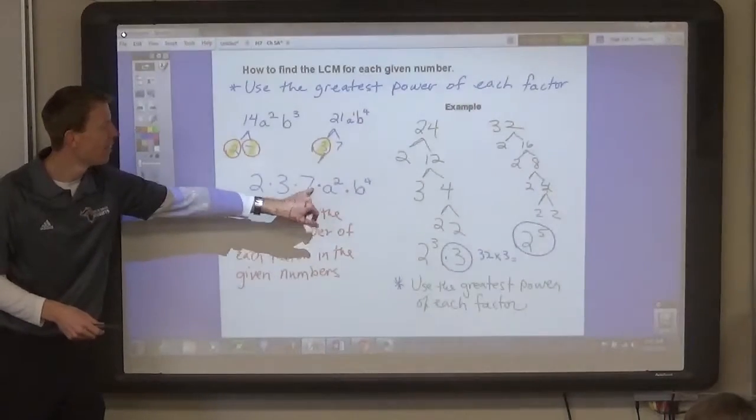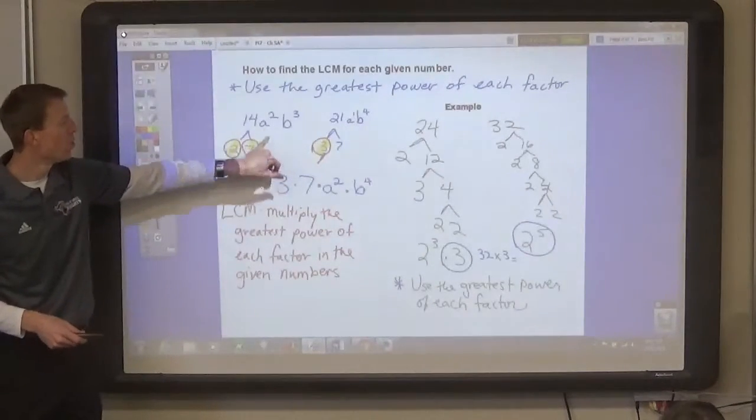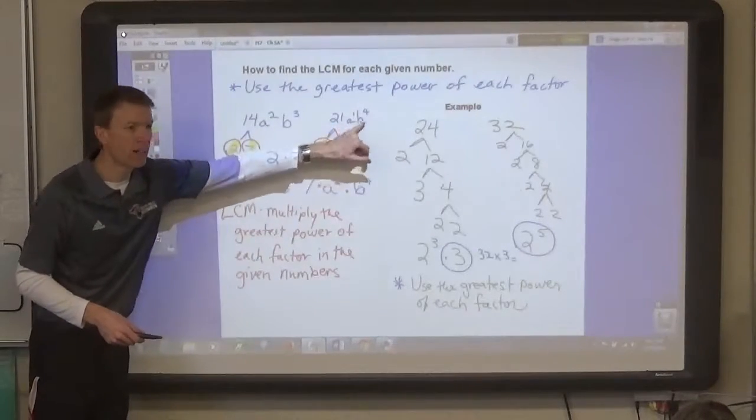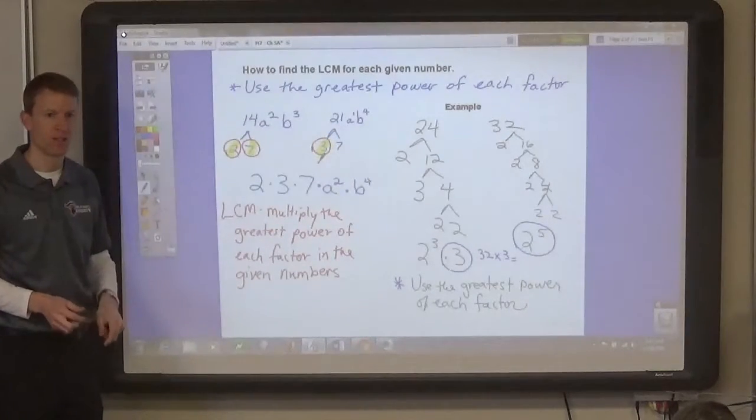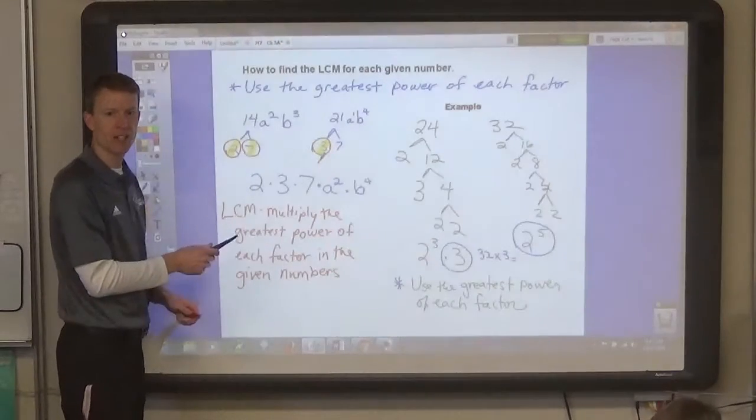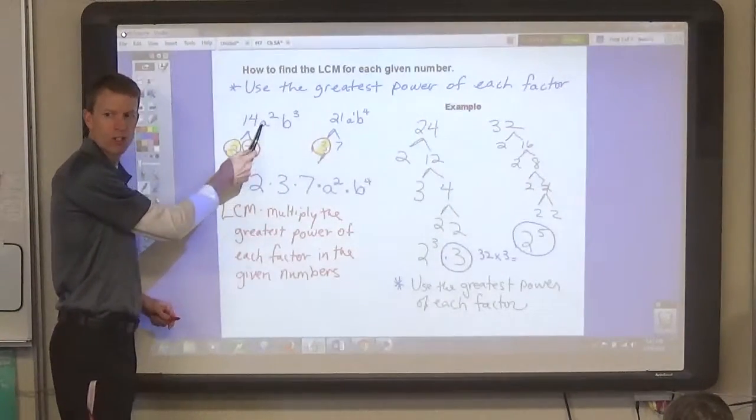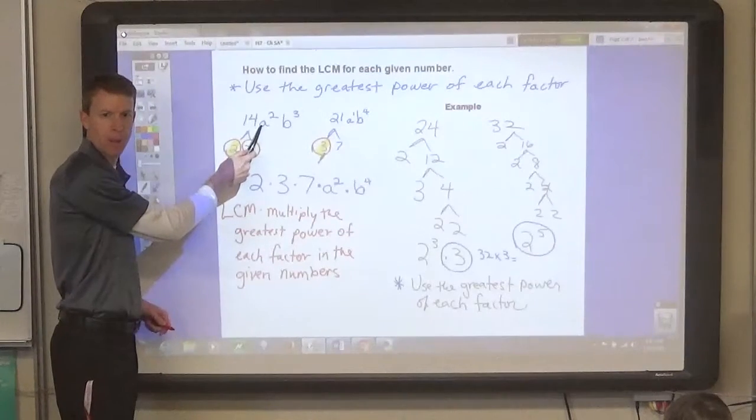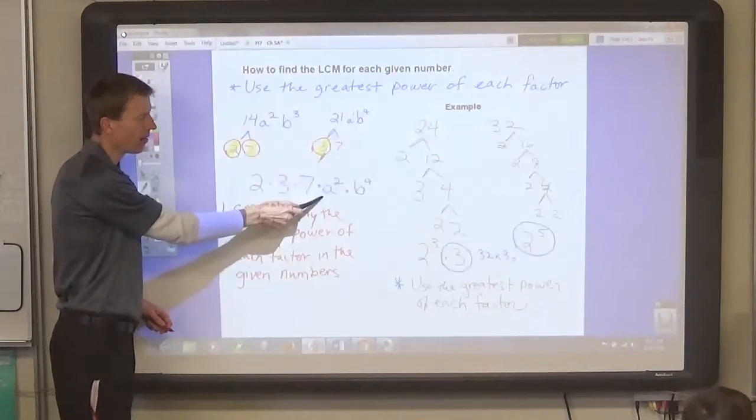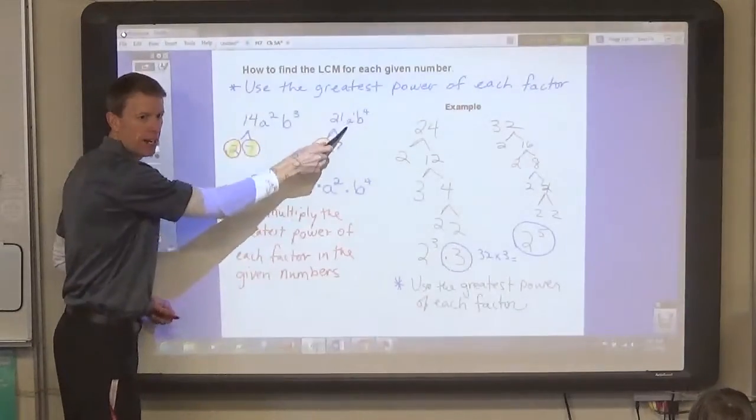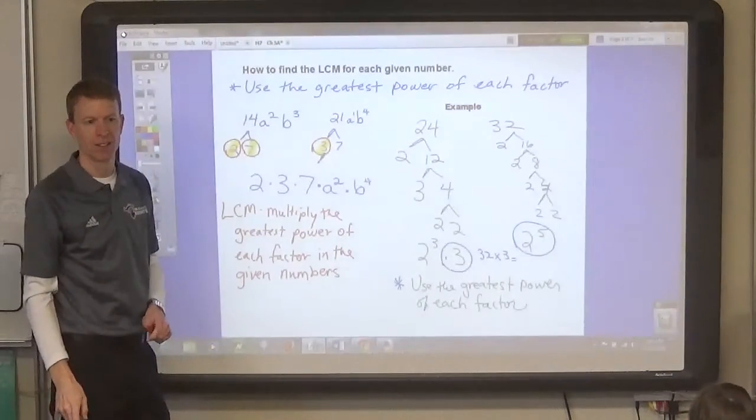Then, you multiply those together. And then, you use the greatest power of each of the variable factors. So, if there's an a squared and an a, which one would you use? Brett? The square. The a squared, yep. Because that's a bigger power than the a to the first power.